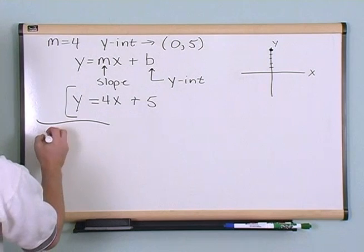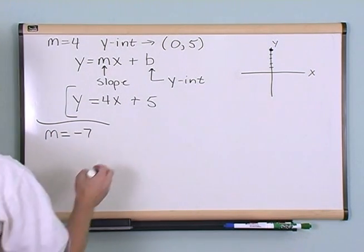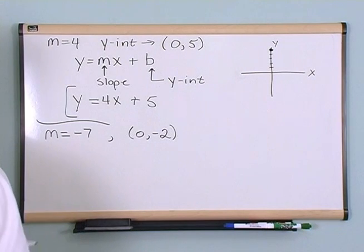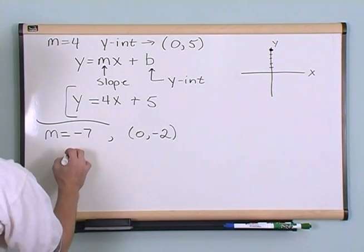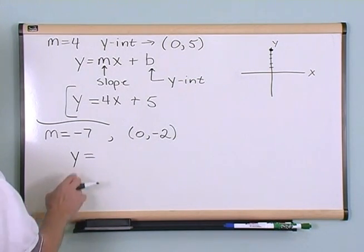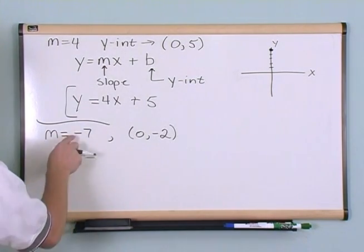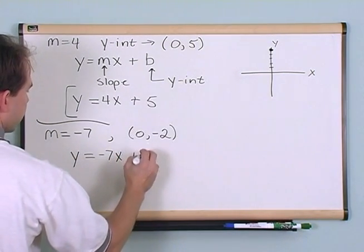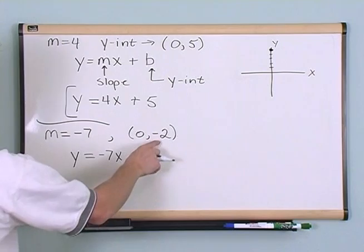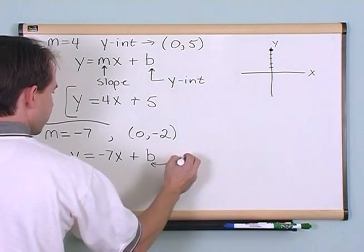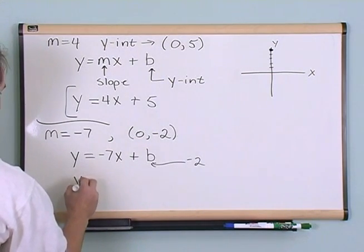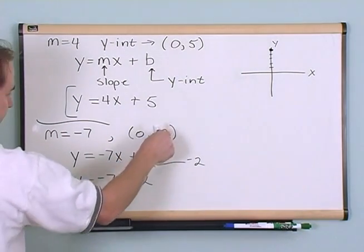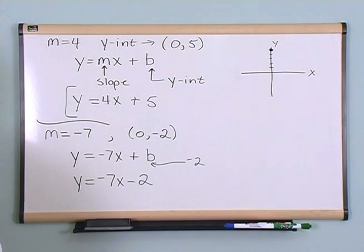What if I gave you a different piece of information: the slope is negative seven and the y-intercept is negative two? It's very simple — I write y = mx + b. m is negative seven, so I have -7x, and b is the y-intercept, which is negative two. So the equation becomes y = -7x - 2, because the y-intercept is negative.